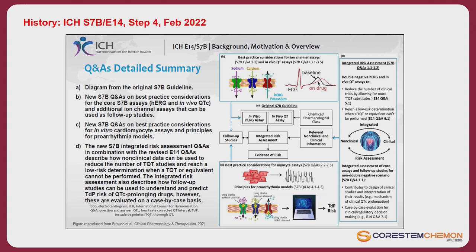For E14, reducing the number of clinical trial participants — from 30 up to 100 — is mentioned in the summary; the study itself can also be waived. When the TQT study is incomplete, S7B data can be integrated and used. The ignored data mentioned previously refers to cases where integrated TQT data cannot be fully used, so S7B data is integrated instead.